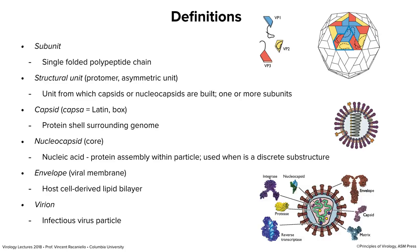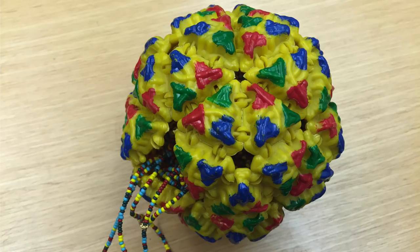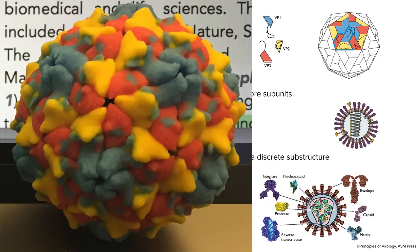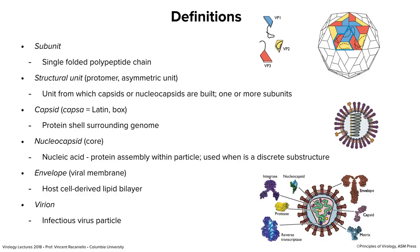A capsid is the protein shell surrounding the genome. That poliovirus capsid is diagrammed on the upper right, and here it is on the desk. This model is a poliovirus capsid; next to it is another model made on a 3D printer. There's no membrane on either one of these virus particles. The word comes from Latin meaning 'box' — the protein shell surrounding the genome.